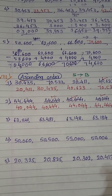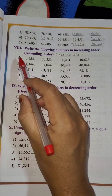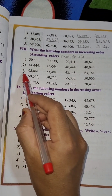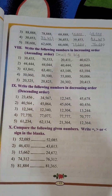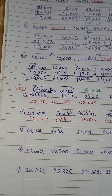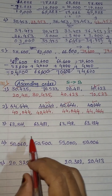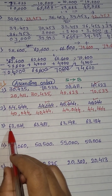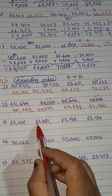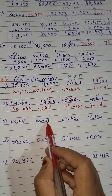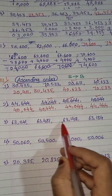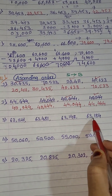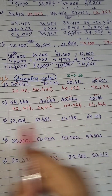Now let's move to the third one. I have already written the same example here. So let's do it: 63,841; 63,481; 63,148; 63,184.